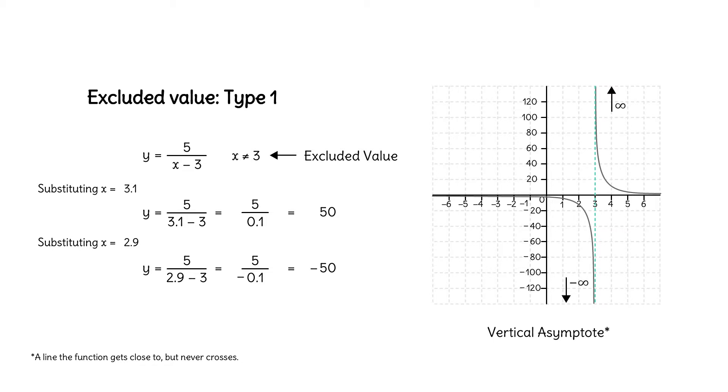Remember, if a value results in division by 0, it's an excluded value, and it results in a vertical asymptote for the graph. This is the first type of excluded value we sometimes see.